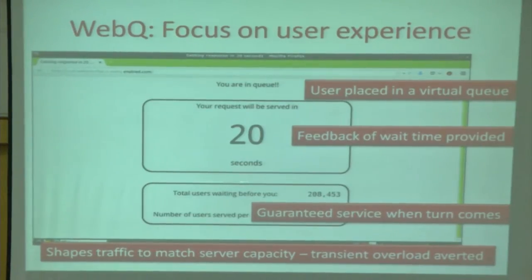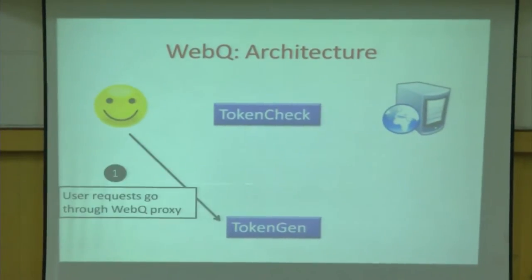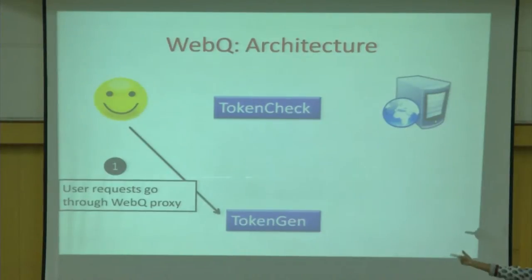What we are trying to do is simple — if you've been to a bank you've received one of those tokens; it's just that. There is a burst of traffic and we are smoothing out that traffic to match server capacity so that transient overload is averted. We do this by assigning wait times — instead of returning a Service Unavailable page, we return a web page that auto-redirects after a certain wait time. For a WebQueue-enabled website, you go to the website; if it's not overloaded you go through; otherwise you get a refresh page. The system has two entities: what we call a token gen and a token check.